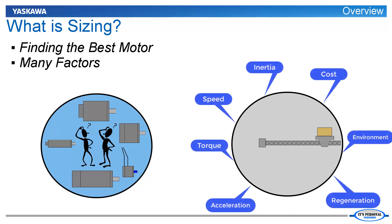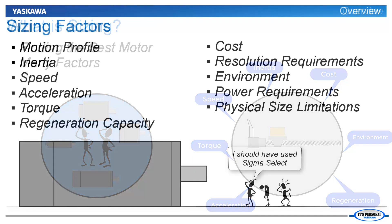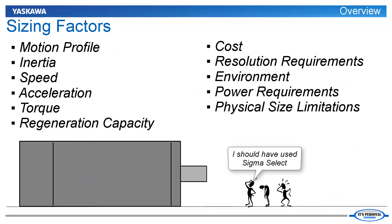There are many factors that are used to determine the best motor. The motion profile, along with the system inertia, determine the speeds, accelerations, and torques that the motor must be able to produce.